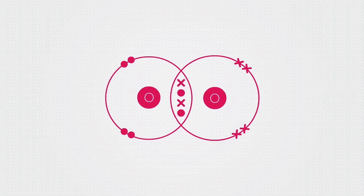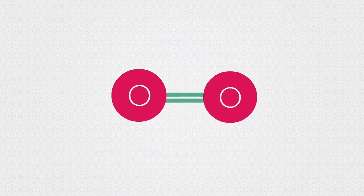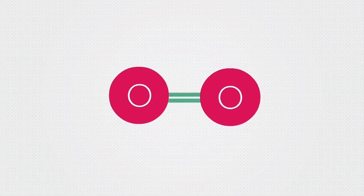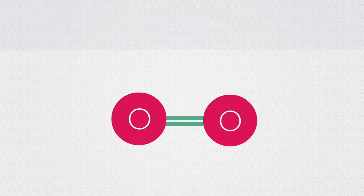The fact that there are two shared pairs of electrons in the middle, where the shells overlap, means that the oxygen molecule O2 has two covalent bonds connecting each oxygen atom. This is called a double bond.